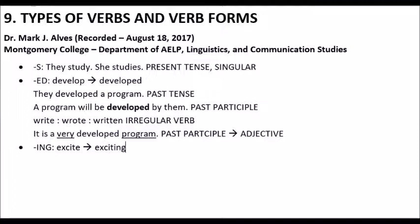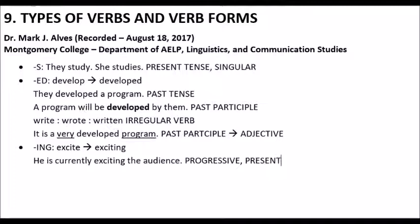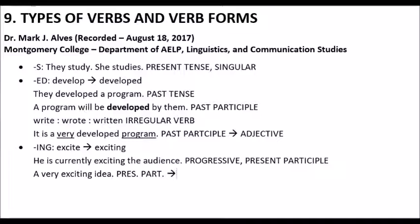With ING, let's get a sample. Excite, exciting. He is currently exciting the audience — we've said that was for progressive tense, and that's fine. In fact that verb form is called the present participle, to express that progressive tense. Here's another way: a very exciting idea. In this case, our present participle functions as an adjective. We see that very and a noun.